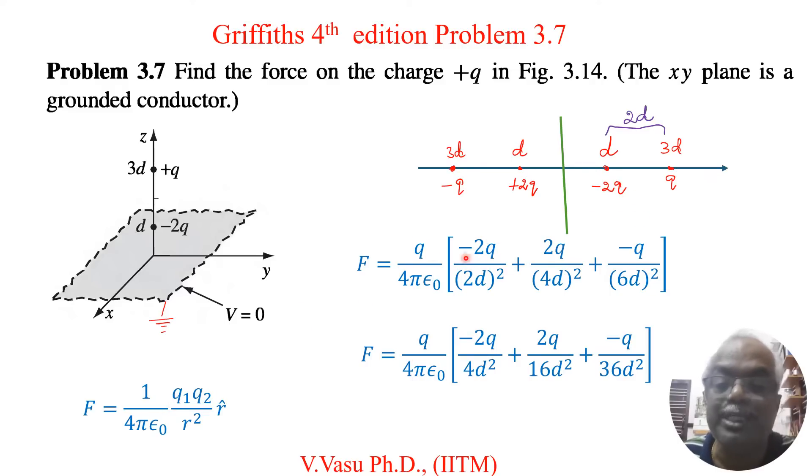I have taken common as Q because this is fixed Q. Then Q2, here it is minus 2Q, divided by R squared. Here distance is 2d, so naturally this will be 2d squared. Then what is the force due to this charge plus 2Q.